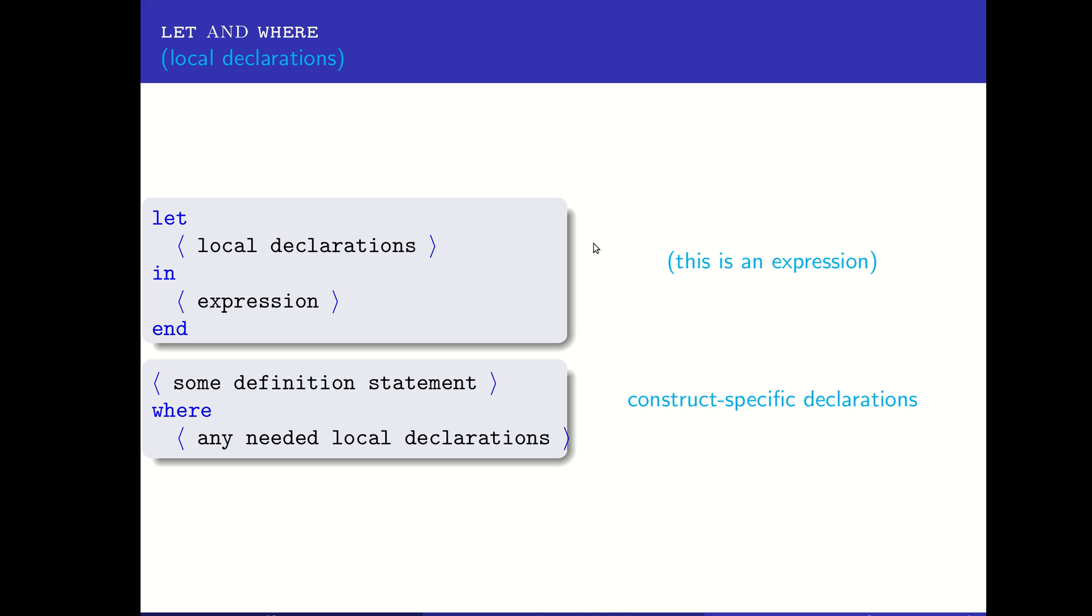Under the hood, there is one other important difference: a let statement is itself a full-fledged expression and can result in a value and can be used in further computations, whereas a where statement is attached to some construct like a function definition and can only be used in relation to that kind of definition statement. We'll see some examples of both and how those can be different in practice.